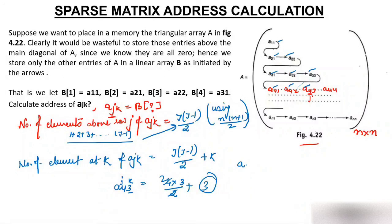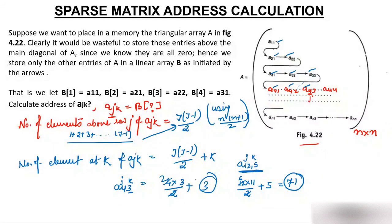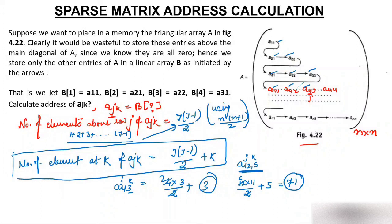Now if you want to find where A(12,5) comes: J=12, K=5 → 12×11/2 + 5 = 66 + 5 = 71. So A(12,5) exists at the 71st location. This is the formula for calculating the index of any element in a sparse matrix stored using a diagonal (lower triangular) matrix representation.